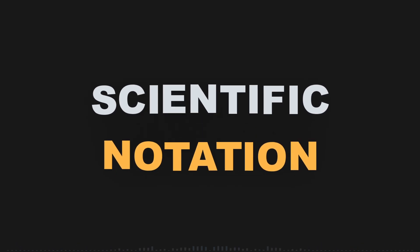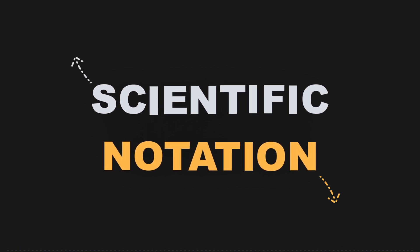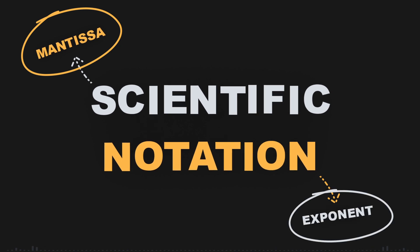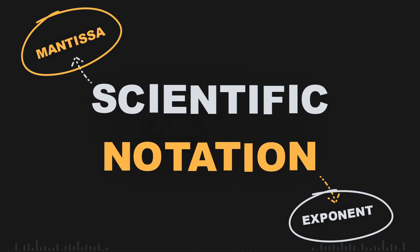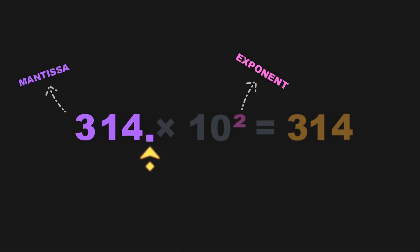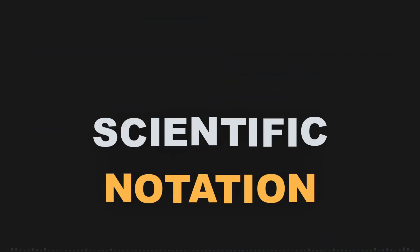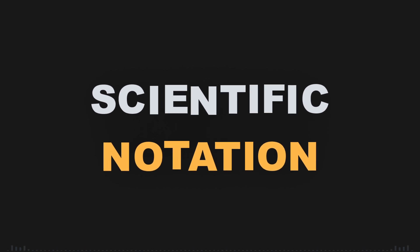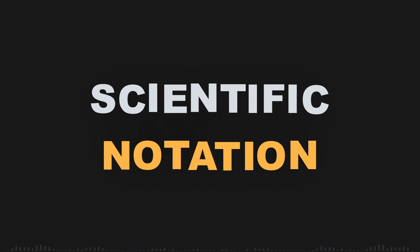Scientific notation is a way of expressing very large or very small numbers in math and science. It breaks a number into two parts: a mantissa — the significant digits — and an exponent, which indicates the position of the decimal point. For example, 3.14 times 10 to the power of 2 represents 314. Here, 3.14 is the mantissa and 2 is the exponent, meaning we shift the decimal point two places to the right. Scientific notation allows us to represent a vast range of values concisely, handling numbers like 0.0000314 as 3.14 times 10 to the negative 5, or 3,140,000 as 3.14 times 10 to the 6.